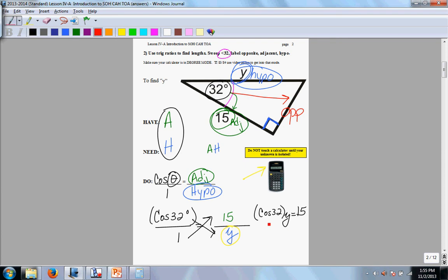Now we're going to divide both sides by cosine 32. Why? Because we want to get that y by itself. Notice I keep parentheses around that. So now to get y, it's going to equal 15 divided by the cosine of 32 degrees.